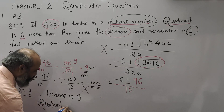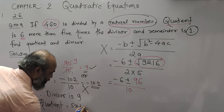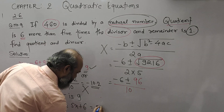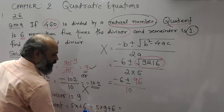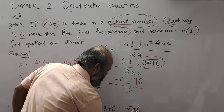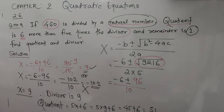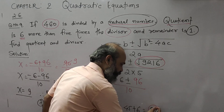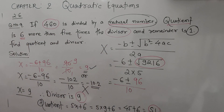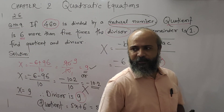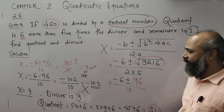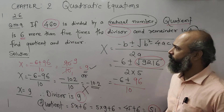And the quotient is 5x + 6. What is x? x is 9, so 5 × 9 + 6 = 45 + 6 = 51. So our answer is: divisor is 9 and quotient is 51. Next question we will see in the next video.